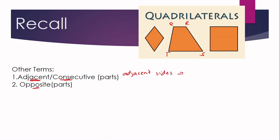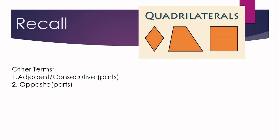The adjacent sides of quadrilateral QRST are: segment QR and segment RS is one pair of adjacent sides. Another pair is segment RS and segment ST. Also, segment ST is adjacent to segment TQ. And lastly, segment TQ is also adjacent to segment QR. So there are four pairs of adjacent sides.